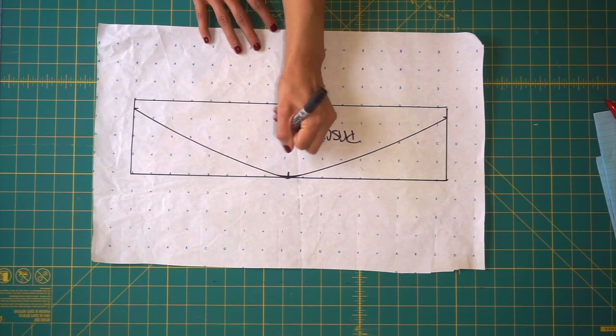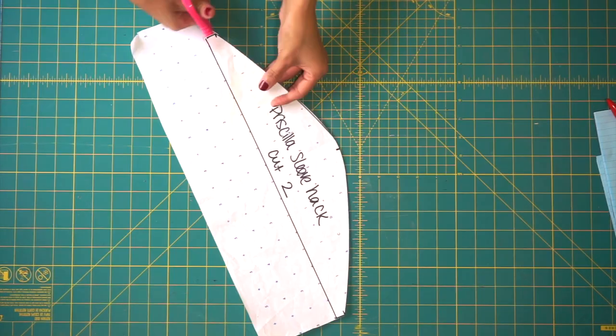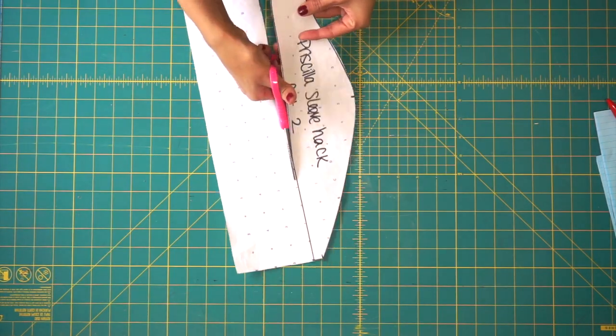Next label your pattern. I labeled it Priscilla Sleeve Hack and you want to cut two of these. Go ahead and cut out your pattern piece using paper scissors.